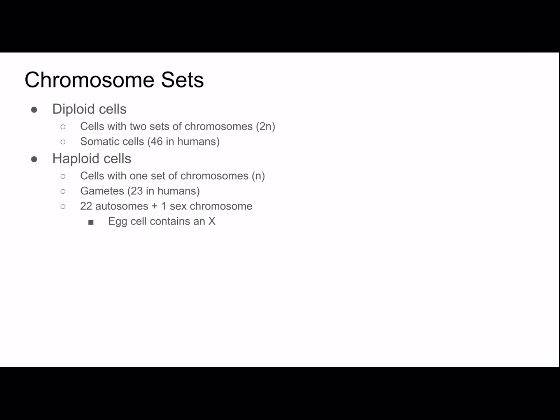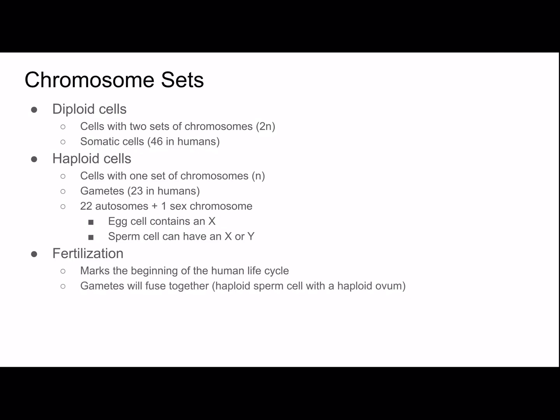An egg cell will contain an X, and a sperm cell can have either an X or a Y. This is where the 50% chance of having a female or male offspring comes from — the X is automatically inherited from the egg cell, and the sperm could have an X or a Y. Fertilization marks the beginning of the human life cycle: gametes fuse together, a haploid sperm cell with a haploid ovum. It's important to note why the gametes must be haploid, because if the gametes were diploid, their fusion would create an organism with double the normal amount of chromosomes. The gametes have to have half the diploid number in order to form a diploid organism.